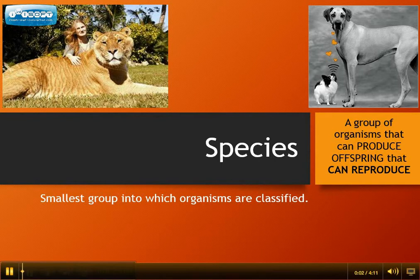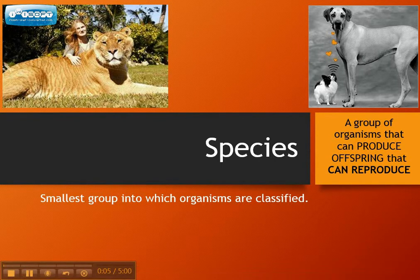We're going to talk about species. What exactly distinguishes a species? A species is a group of organisms that can produce offspring, but more importantly, the offspring also have to be able to reproduce. That means it's not enough that they can have kids — they have to be able to have grandkids.